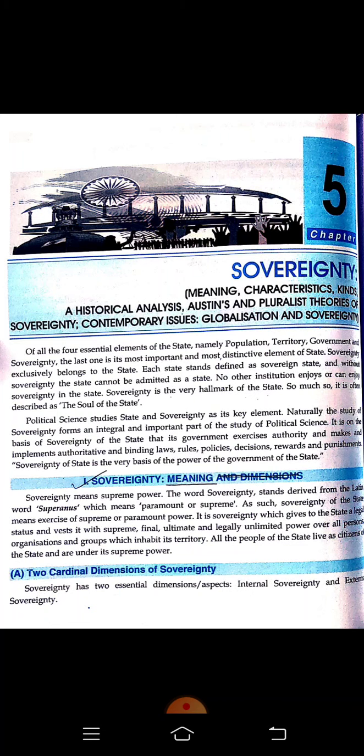We can divide sovereignty into two aspects: internal sovereignty and external sovereignty. Internal sovereignty means when a country is totally free to take its internal, domestic decisions, which are applied all over the territory of the state upon its own people. External sovereignty means the country takes international decisions — such as international relations and trade relations — without being influenced by any other foreign country or foreign power.